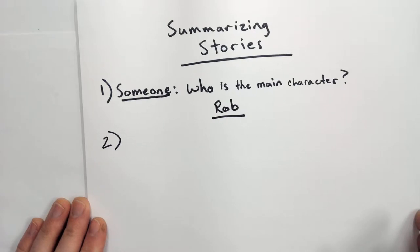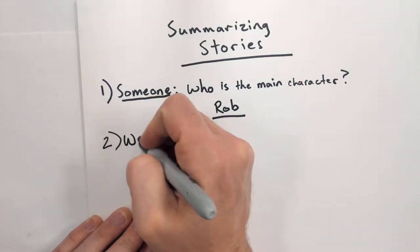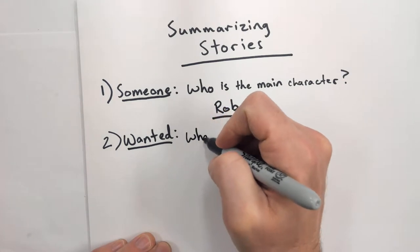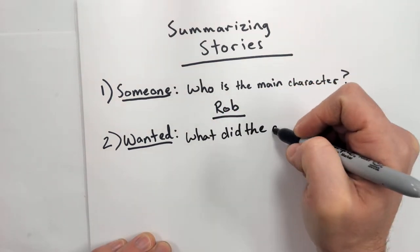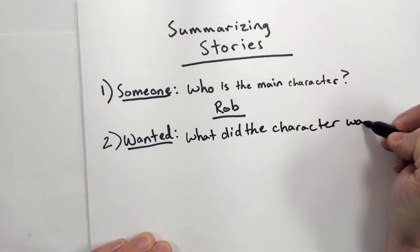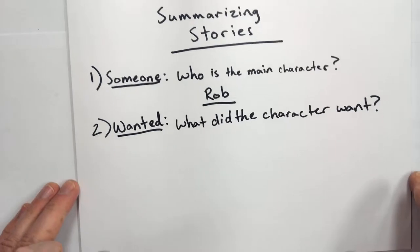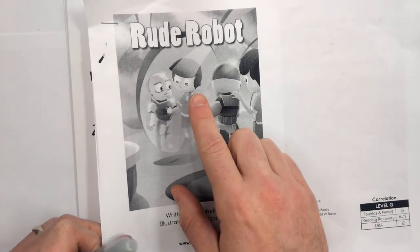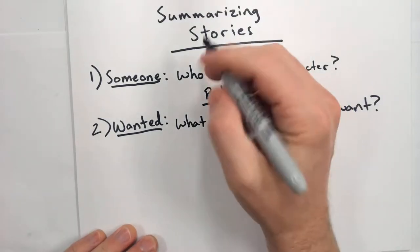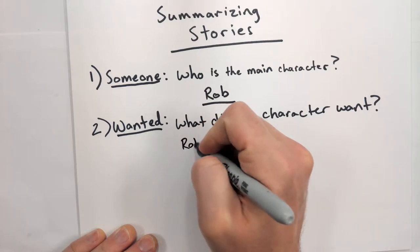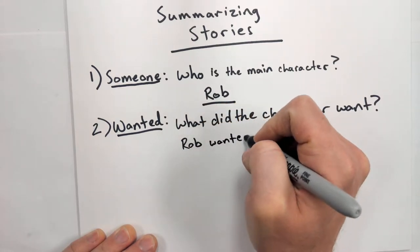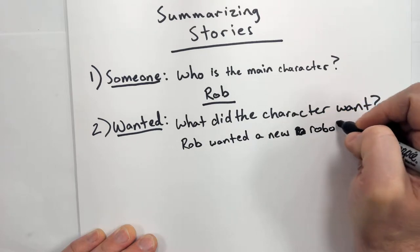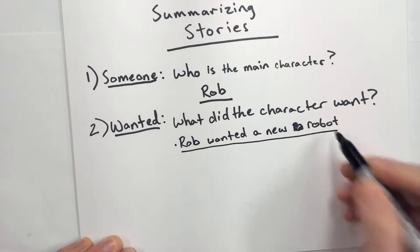Part two: we have to figure out what did the character want. So in this case, in Rude Robot, I think that at the beginning Rob wanted a new robot. So this is what he wanted.